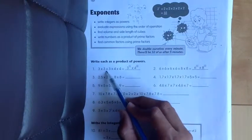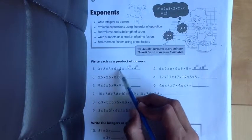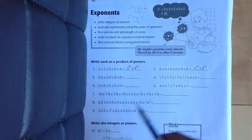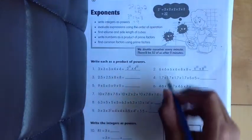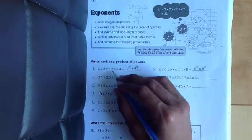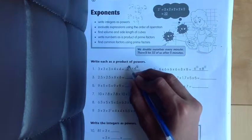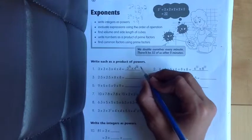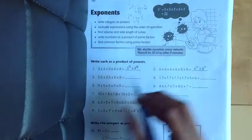So 3 times 3 times 3 times 4 times 4. How many 4's do we see? We see 2 4's, so we're going to write 4 to the power of 2 right here. And for 3's, since there are 3 3's, we're going to write 3 to the power of 3. So we're done the first question.